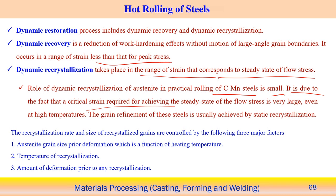Grain refinement should follow the static recrystallization process, which usually occurs at relatively low temperature. The recrystallization rate and the size of the recrystallized grain are controlled by three major factors: first, the initial austenitic grain size, which is a function of temperature; second, the temperature of recrystallization; and third, the amount of deformation — that is, the stored energy during the rolling operation, which decides the level of recrystallization.